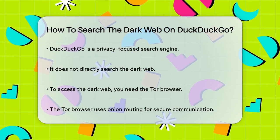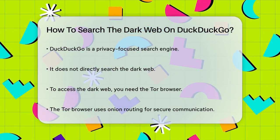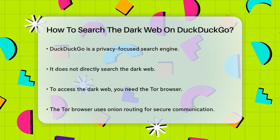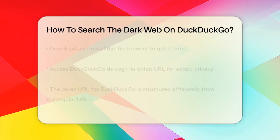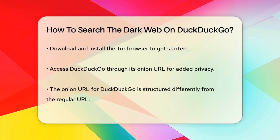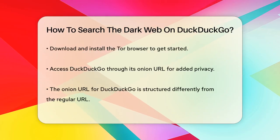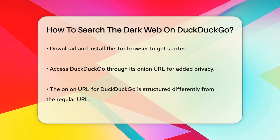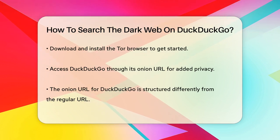To start, you'll need to download and install the Tor browser. This browser is specially designed to navigate the dark web by using Onion Routing, which encrypts and routes your communications across multiple servers, making it hard to trace your location and activity.